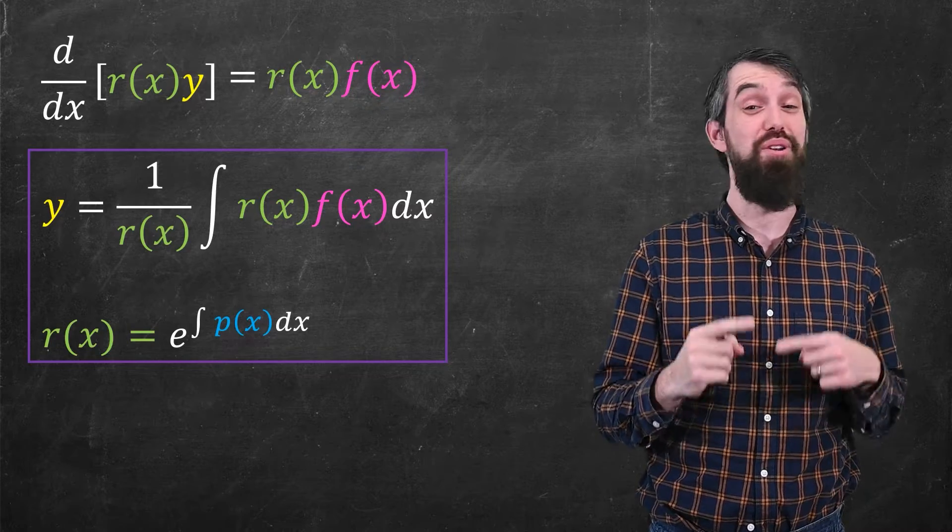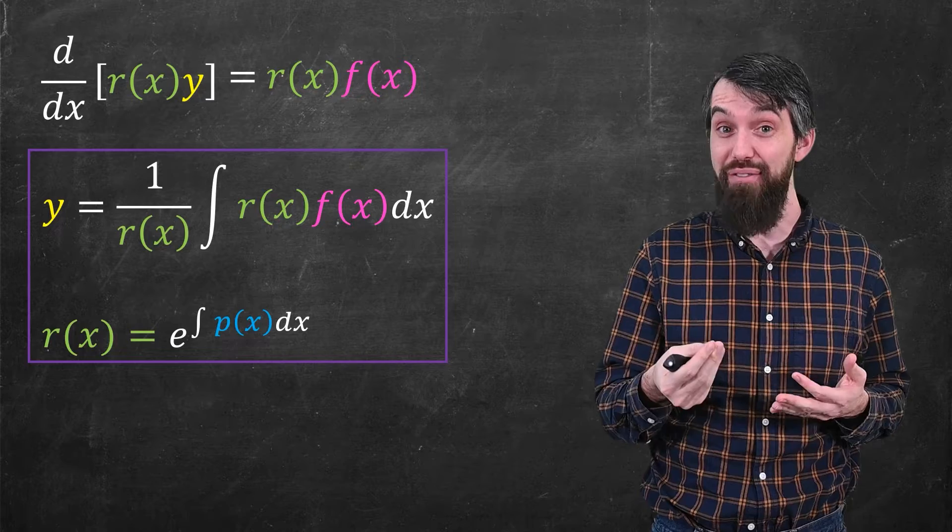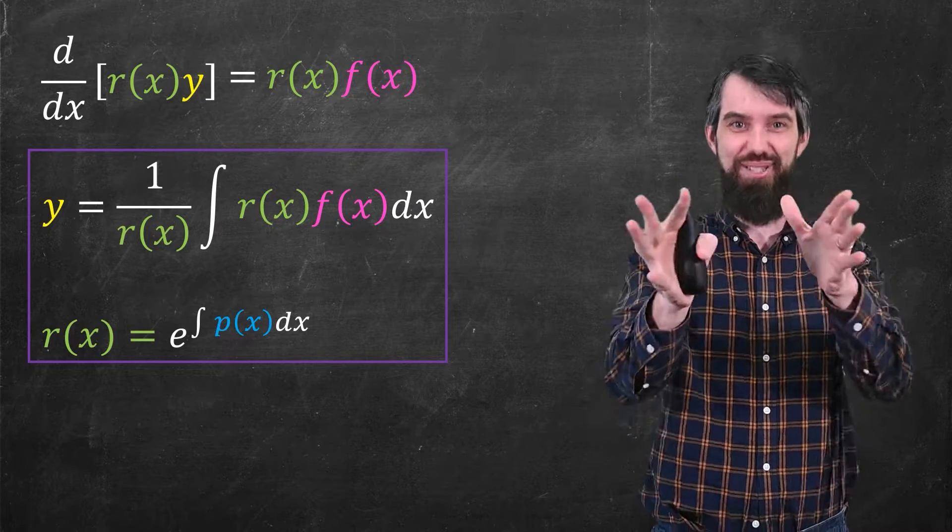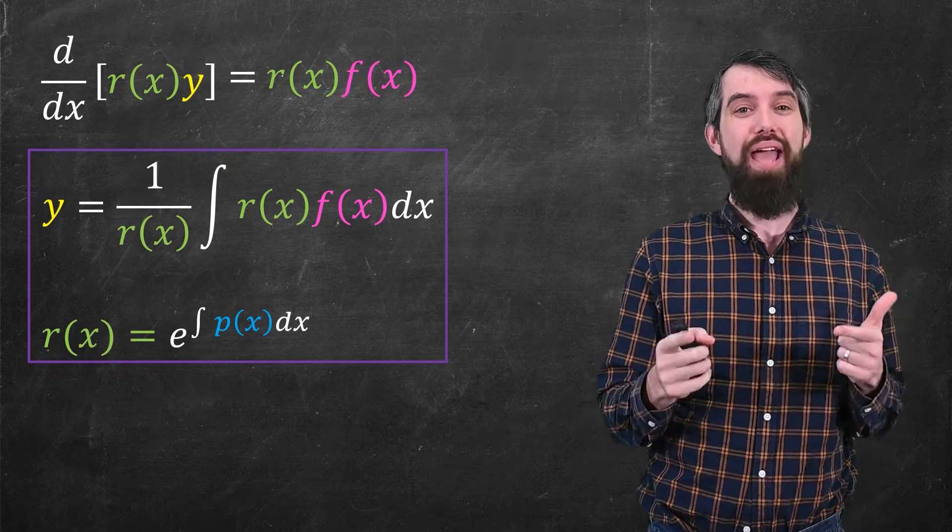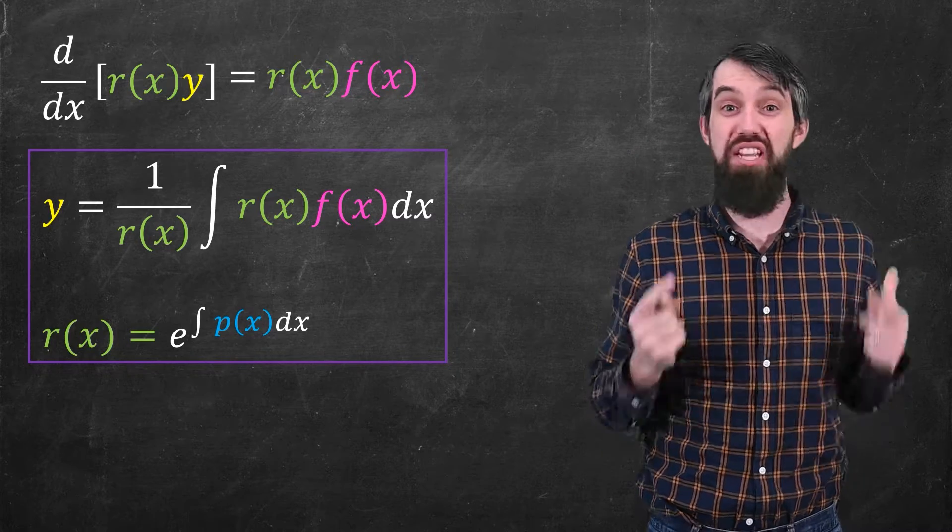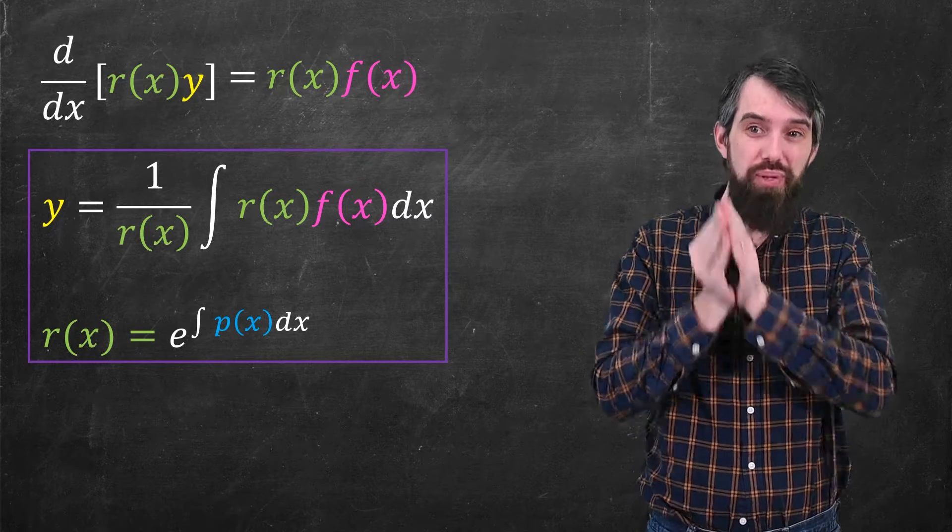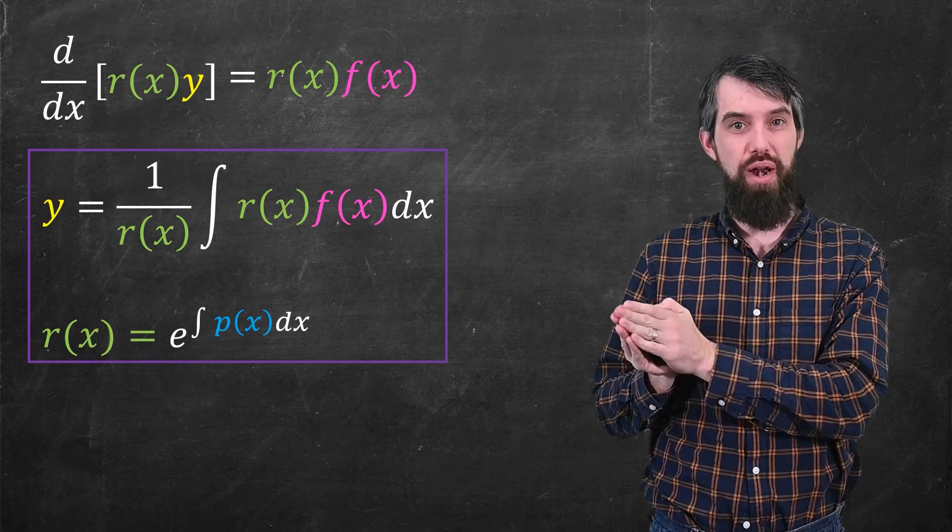By the way, one little thing I've noticed on tests that for whatever reason, students often forget the 1 over r(x) factor. They do everything else correctly, so just make sure that's not going to be you. Either way, what we have is a solution to the original differential equation. Indeed, I encourage you to verify this by taking the derivative, plugging it in, and making sure that you get whatever you get.